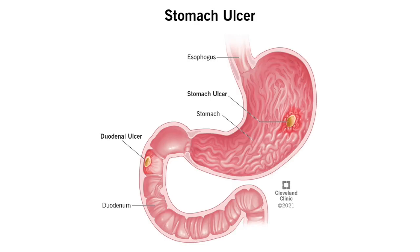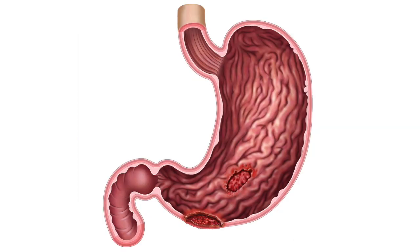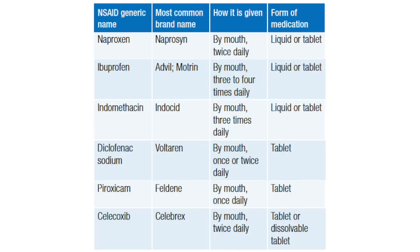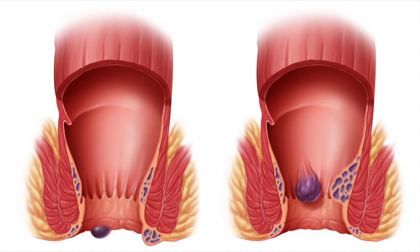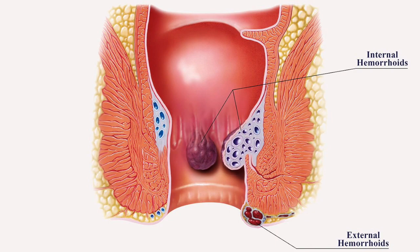Another common temporary condition people have are ulcers. They happen when there are sores on the lining of the small intestine, esophagus, or stomach. Ulcers usually happen because of H. pylori bacterial infections, or long-term anti-inflammatory drugs. Hemorrhoids are swollen and inflamed veins around the lower rectum or anus. External hemorrhoids form on the skin around the anus, while internal hemorrhoids form in the lining of the lower rectum or anus. They can be extremely painful and even lead to rectal bleeding.